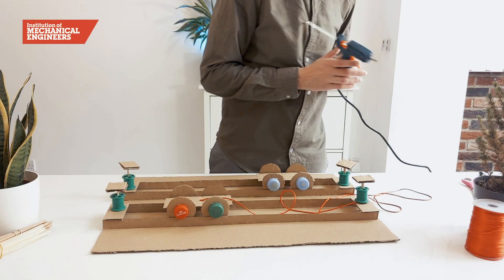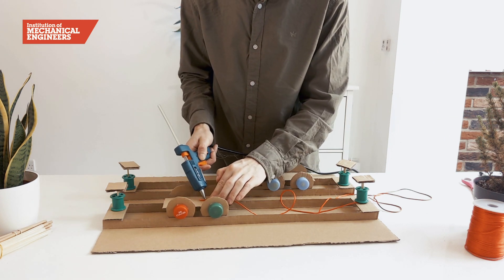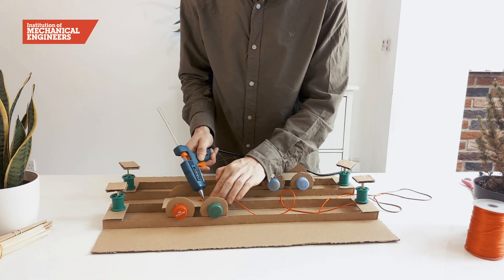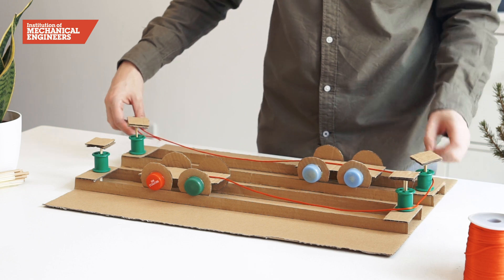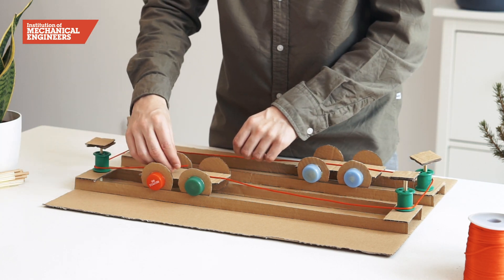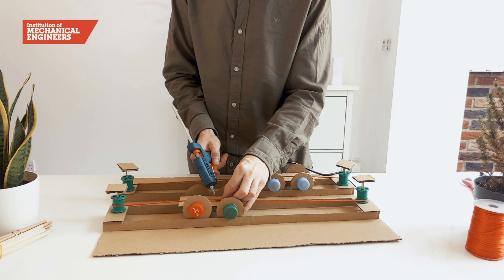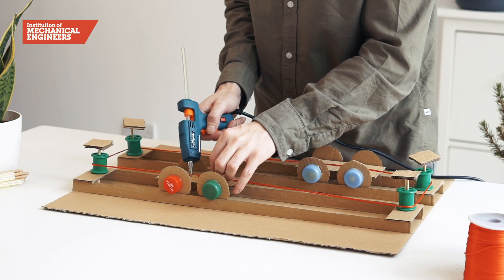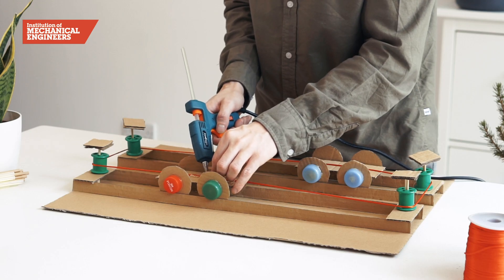Next we will connect the pulley system. Begin by gluing one end of the nylon string to a train then wrapping it around the pulleys at each end of the track. We need to pull the string tightly so there is no slack and then glue the other end of the same train base to create a continuous loop.